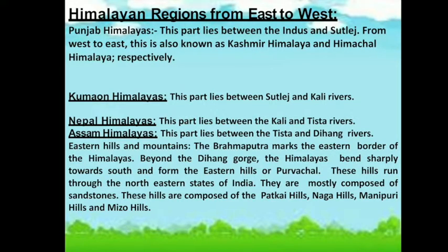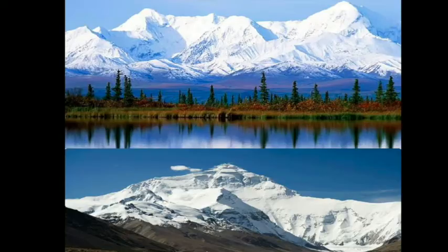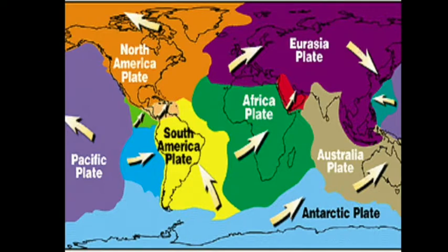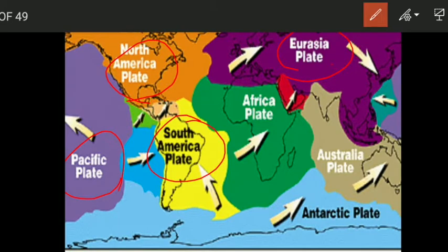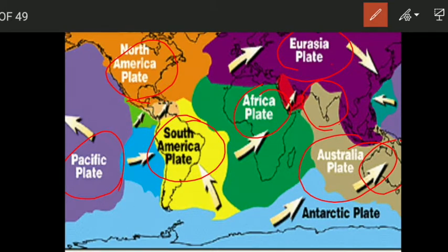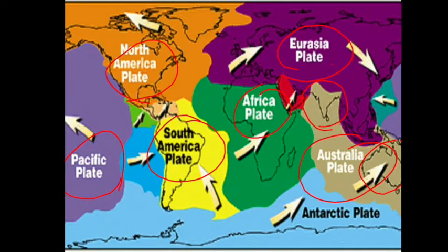I also told you the Himalayan regions from east to west: the Kumaon Hills, the Nepal Himalayas and the Assam Himalayas. One more thing I forgot to mention about tectonic plates — there are seven major plates: the Pacific plate, the North American plate, the Eurasian plate, the South American plate, the African plate, and the Australian plate. India lies on the Australian plate, so whenever asked, the answer is that India lies on the Australian plate.